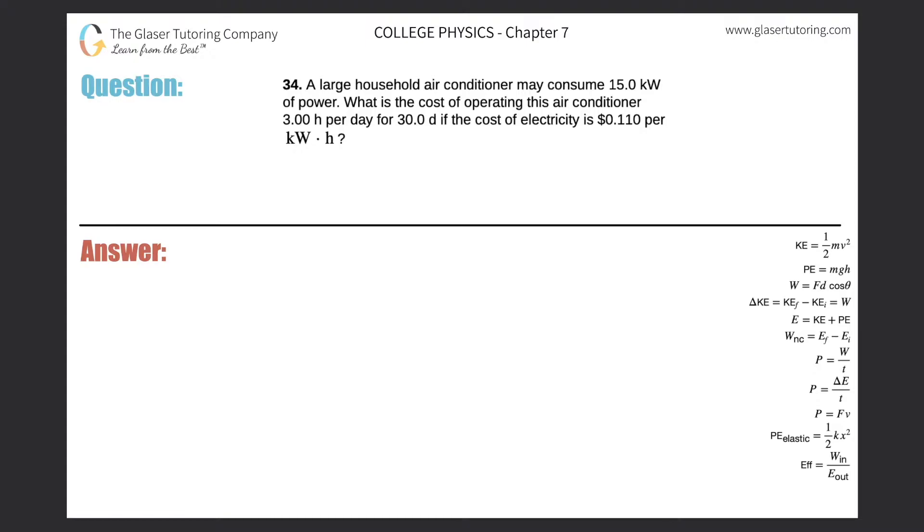Number 34: A large household air conditioner may consume 15 kilowatts of power. What is the cost of operating this air conditioner three hours per day for 30 days if the cost of electricity is 11 cents per kilowatt hour?